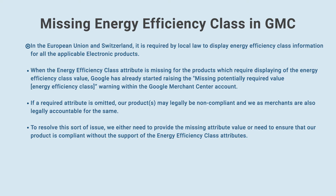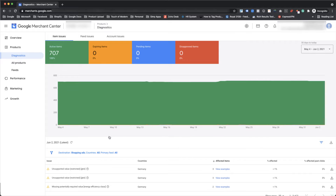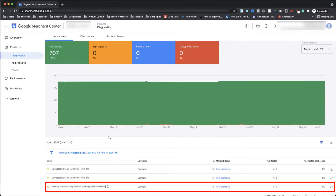In the European Union and Switzerland, it is required by local law to display energy efficiency class information for all applicable electronic products. When the energy efficiency class attribute is missing for products which require displaying of the energy efficiency class value, Google has already started raising the missing potentially required value energy efficiency class warning within the Google Merchant Center account.